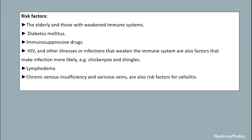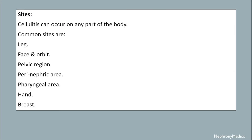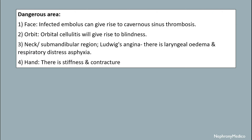Cellulitis can occur on any part of the body, but most commonly on the leg, face and orbit, pelvic region, perinephric area, pharyngeal area, hand, and breast. Dangerous areas include the face, orbit, neck, submandibular region, and hand.